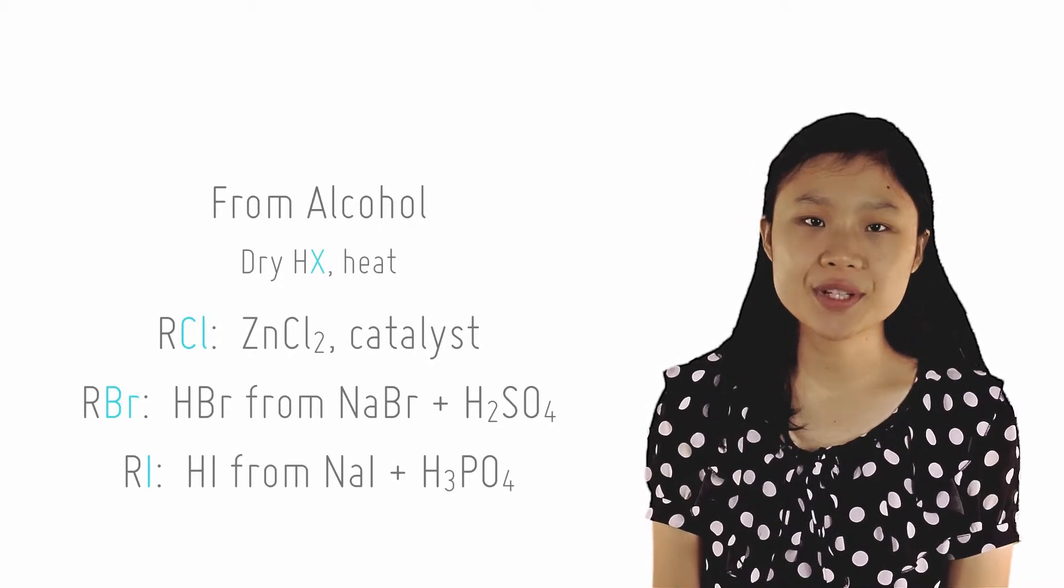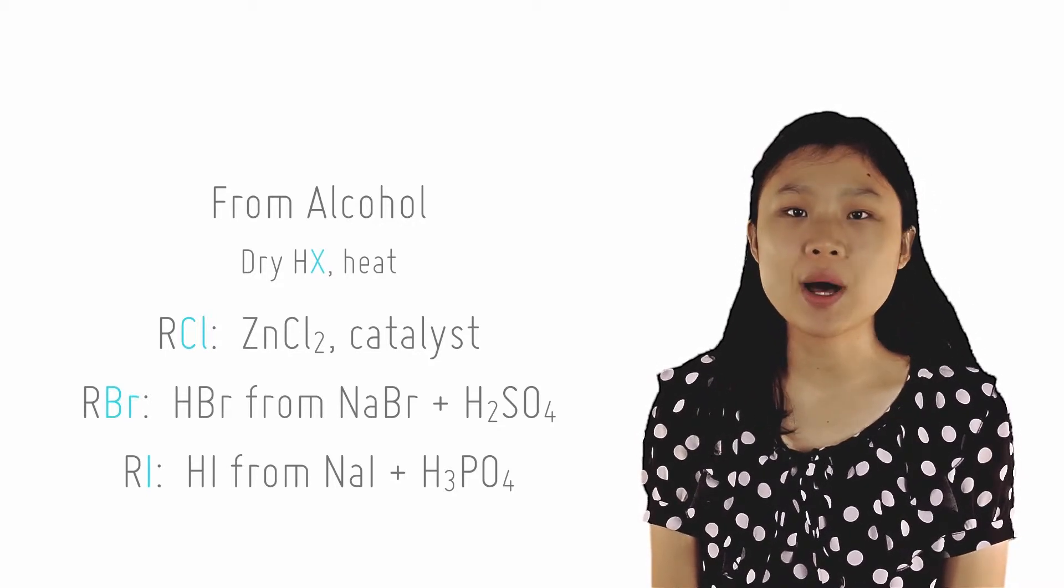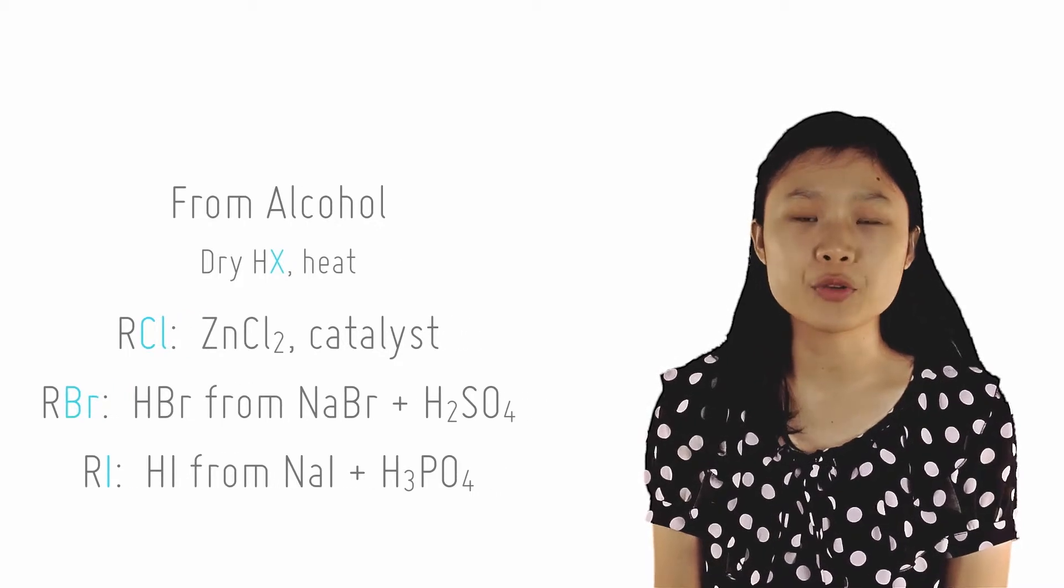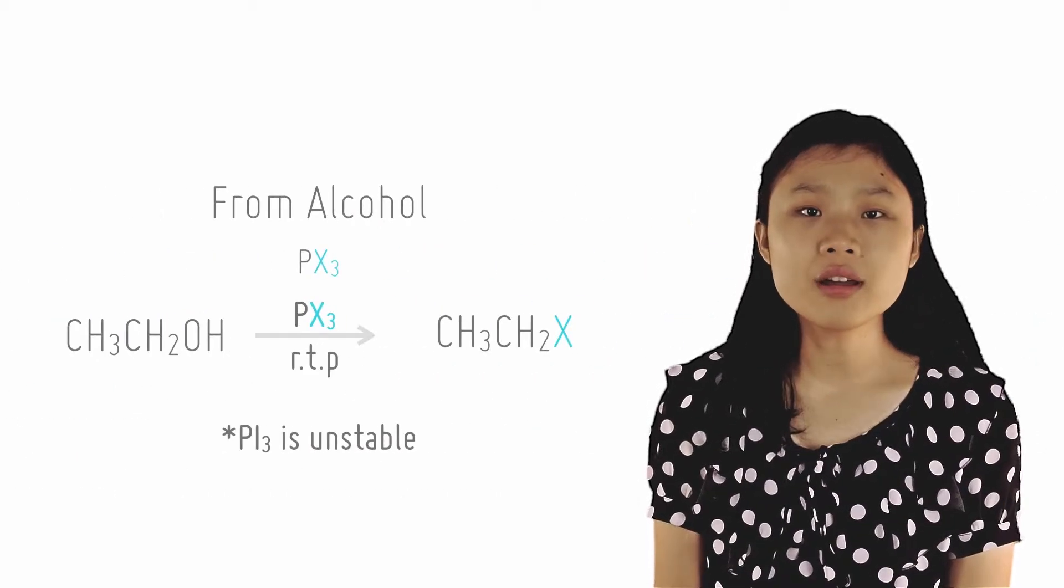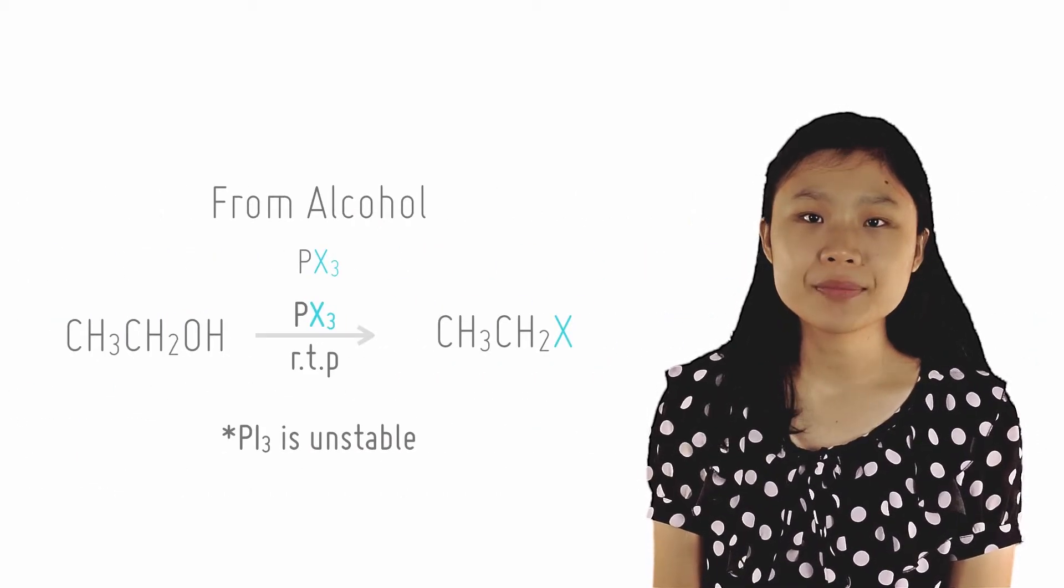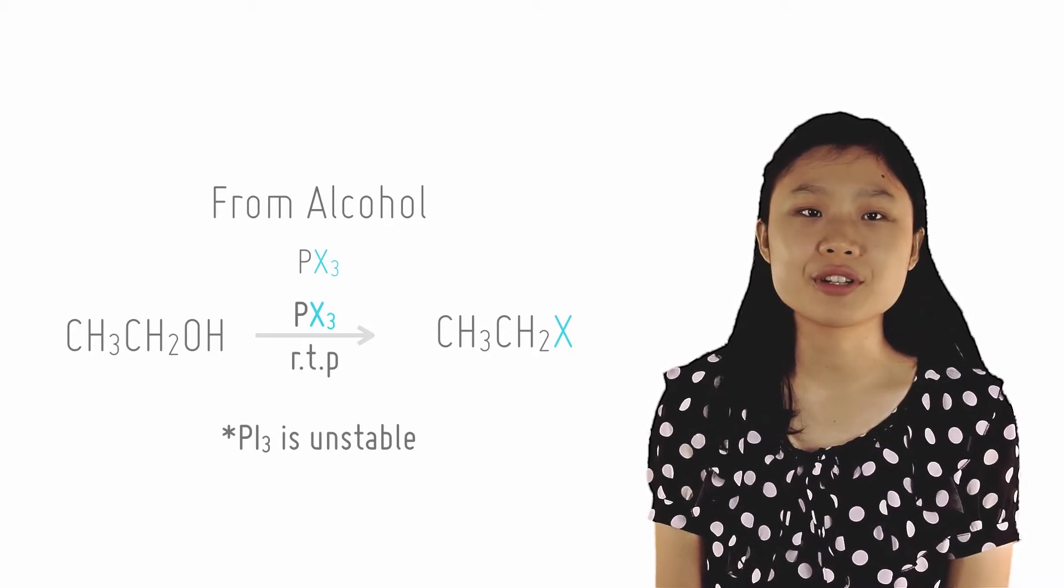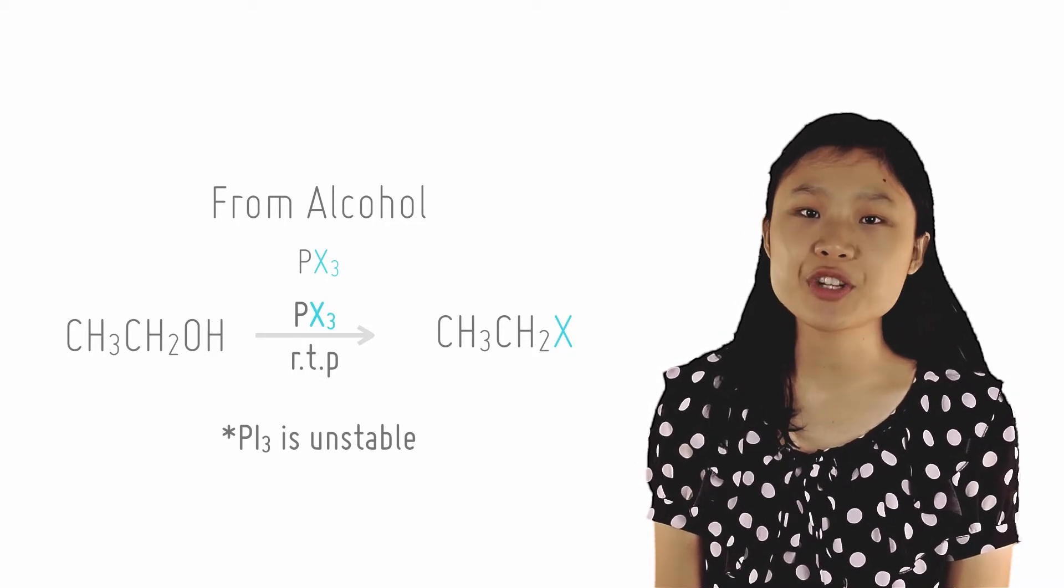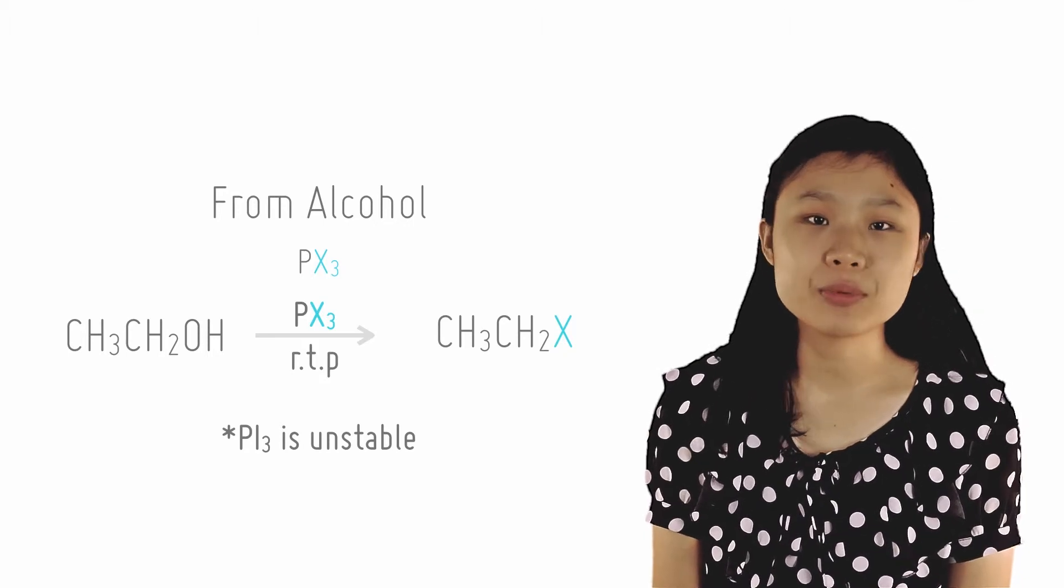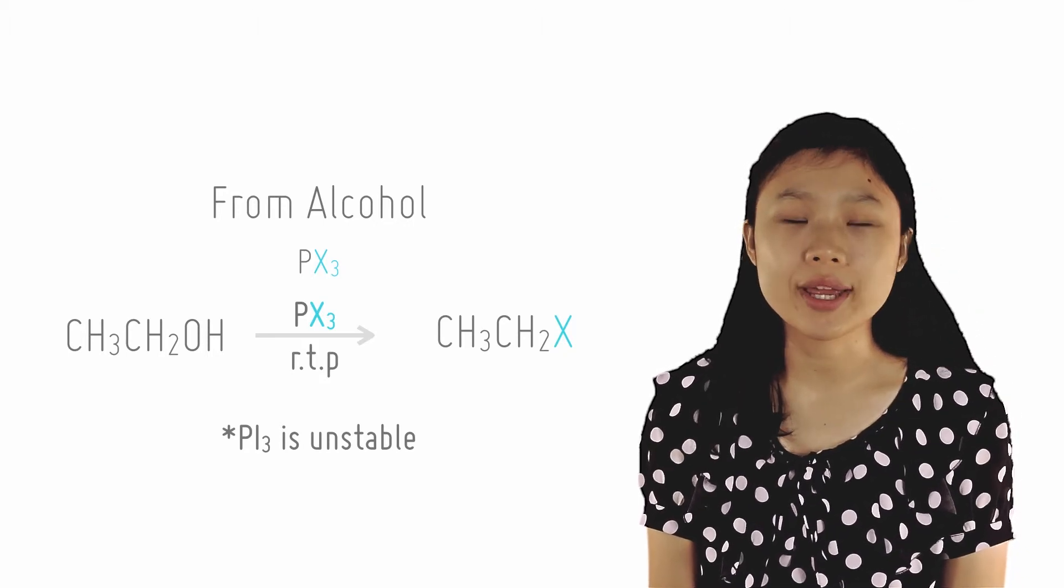Finally, PX3 is another reagent that will produce haloalkanes when reacted with an alcohol at room temperature. However, in the case of PI3, it has to be prepared by mixing red phosphorus and iodine in the reaction mixture as it is unstable, unlike PCl3 or PBr3.